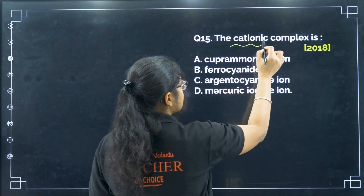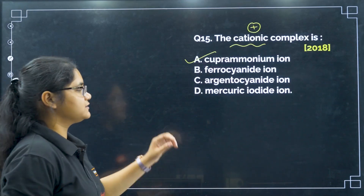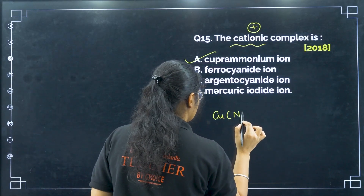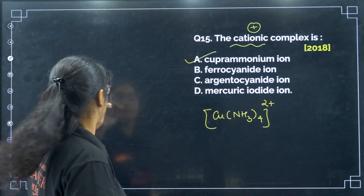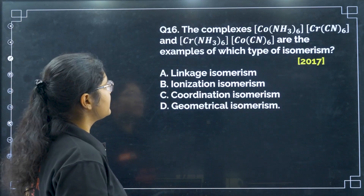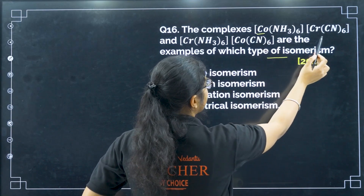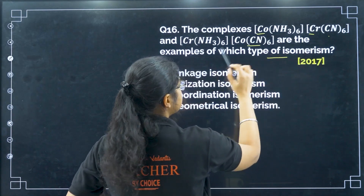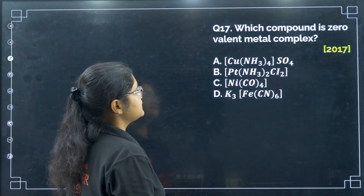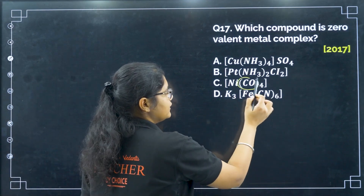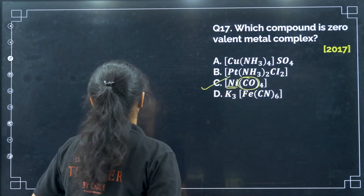Next, a cationic complex has a positive charge — that is the cupra ammonium ion [Cu(NH3)4]2+, which is a cationic complex — option A. Next, the given complexes show coordinate isomerism, where cobalt has cyanide and chromium has NH3 — option C. Which complex is a zero-valent metal complex? CO is a neutral ligand, so the oxidation state of nickel in Ni(CO)4 is 0 — option C.